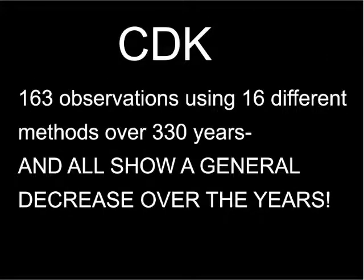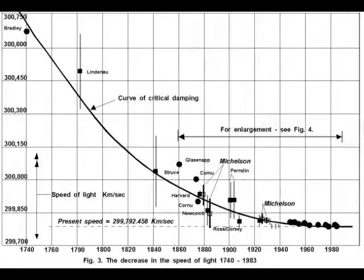In the late 1980s, the Australian creationist Barry Setterfield examined all the available measurements of C. In fact, there have been 163 observations, with thousands of individual experiments, using 16 methods over 330 years, and all show a decline in C.